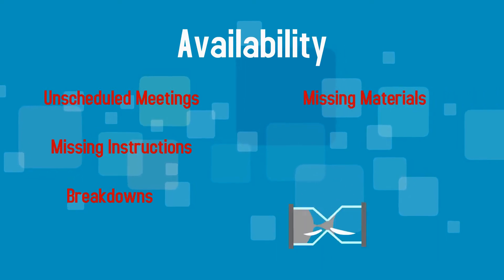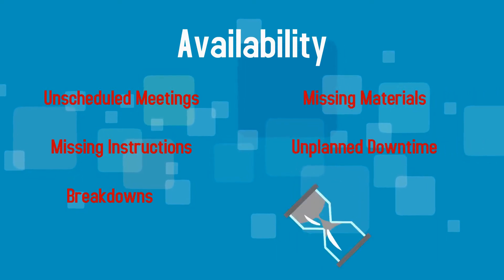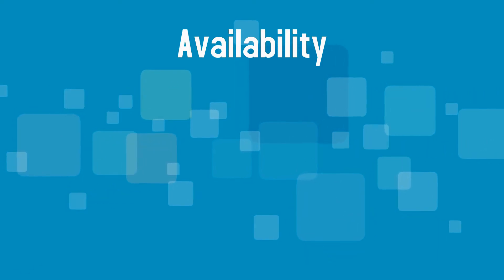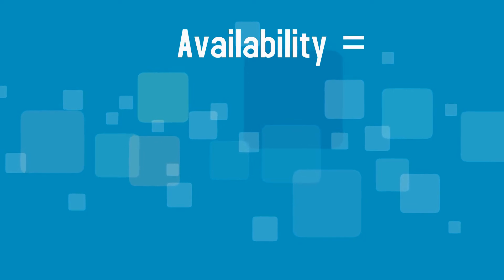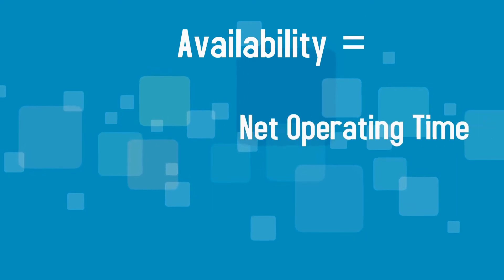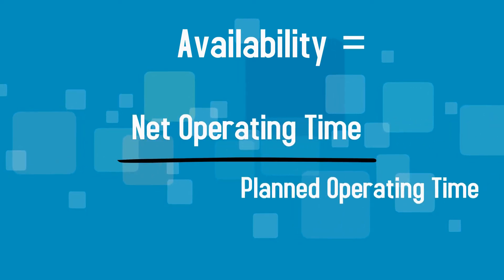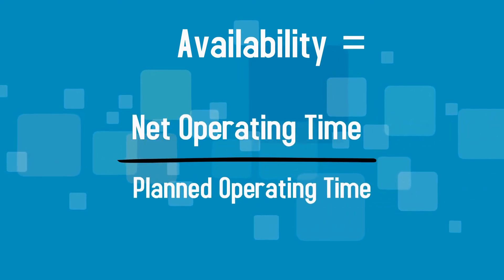Available time can also be reduced by breakdowns, missing materials, or unplanned downtime. The availability factor can be calculated by dividing net operating time by planned operating time.